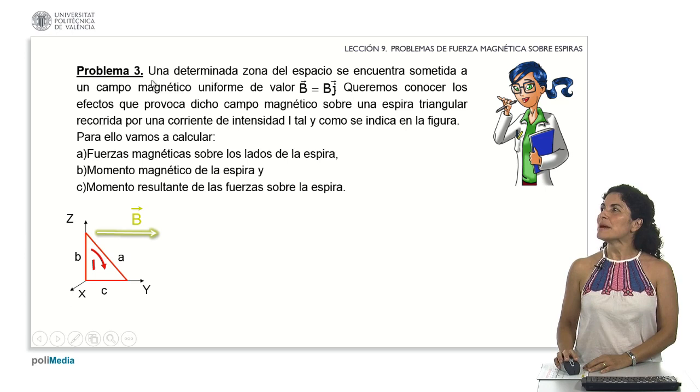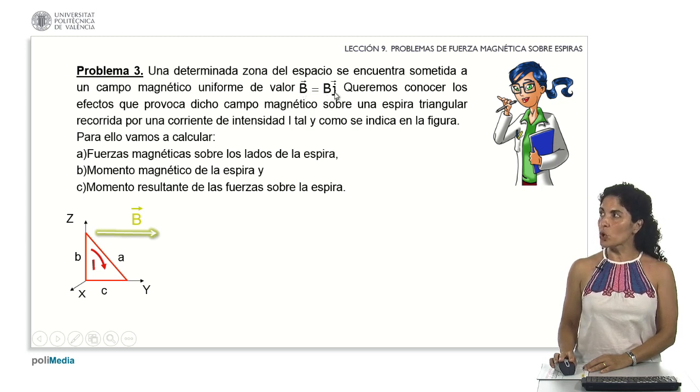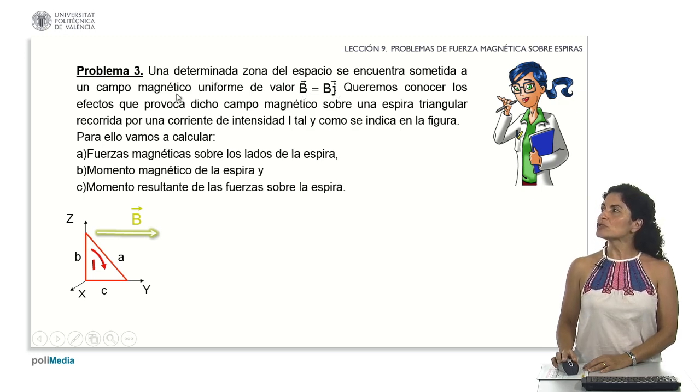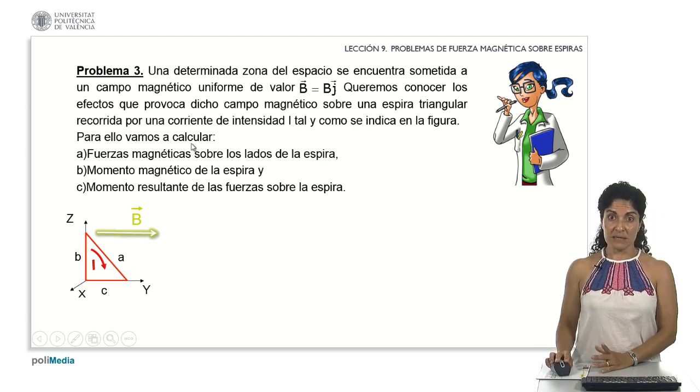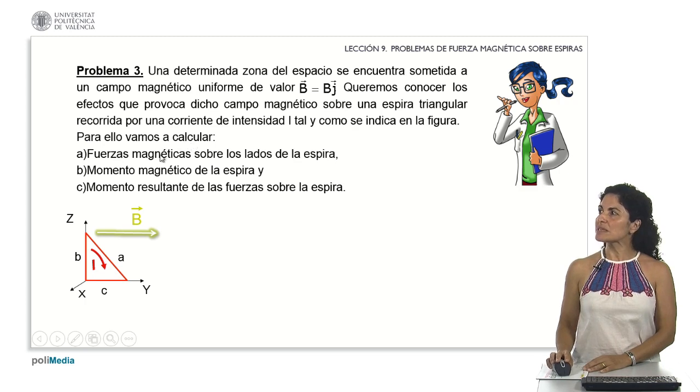Let's proceed with the next problem. I'm given information that a specific region in space experiences a uniform magnetic field with a magnitude B and direction along the J unit vector. We aim to understand the impact generated by this magnetic field on a triangular spiral through which a current I passes, as depicted in this figure. To explore this, we'll compute the magnetic forces acting on the sides of the loop, determine the loop's magnetic moment, and the resulting moment generated by the forces acting on the loop.